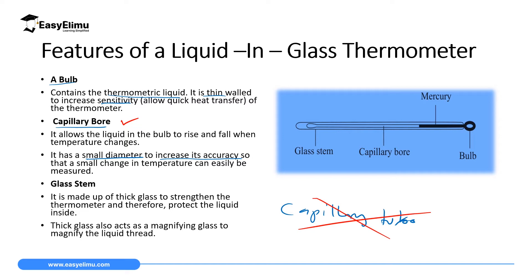Another feature of a liquid-in-glass thermometer is the glass stem. The glass stem is the outer part surrounding the capillary bore. It is made of thick glass. This thick glass strengthens the thermometer and protects the liquid inside, especially when the thermometer undergoes a slight fall. The thick glass also acts as a magnifying glass to magnify the liquid thread inside, so that the thin column of thermometric liquid is magnified for accuracy purposes.